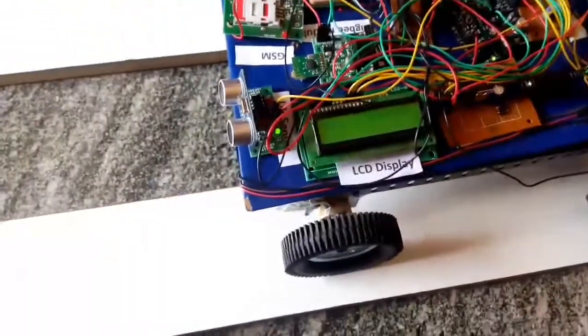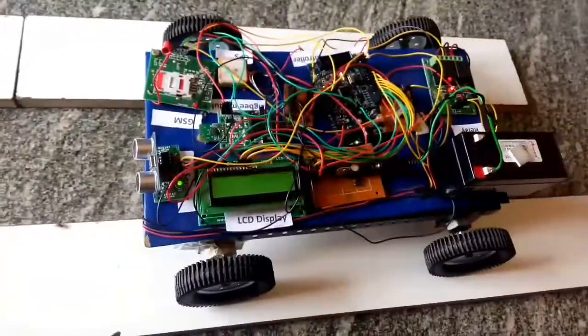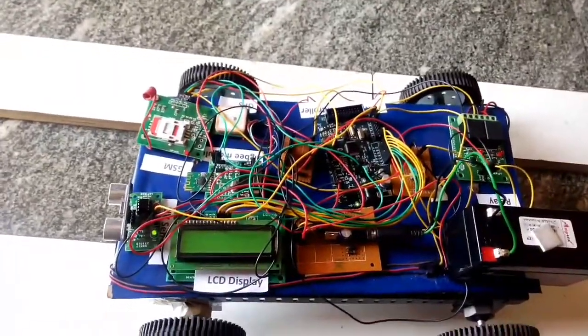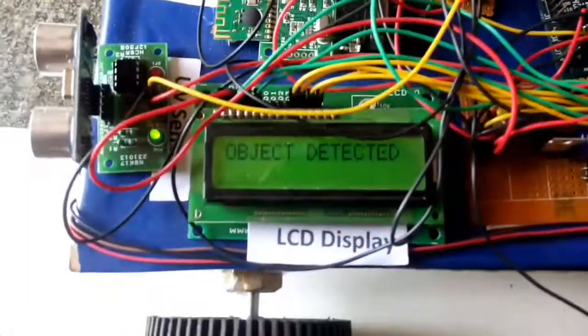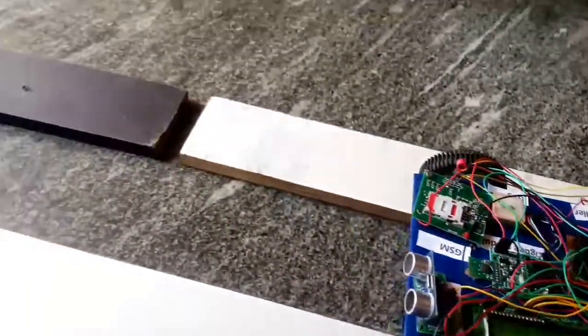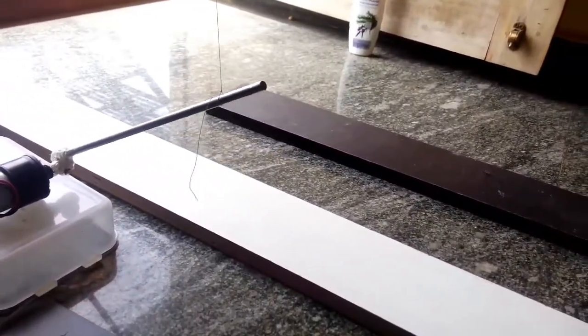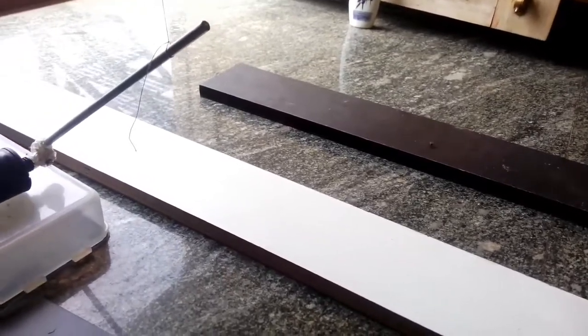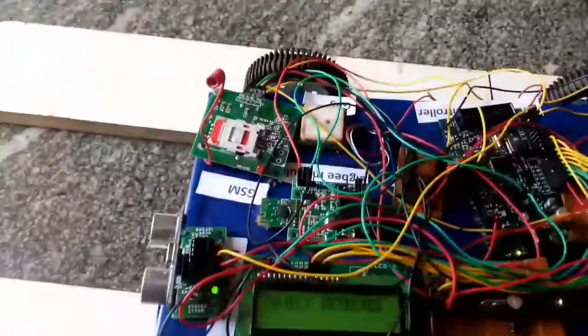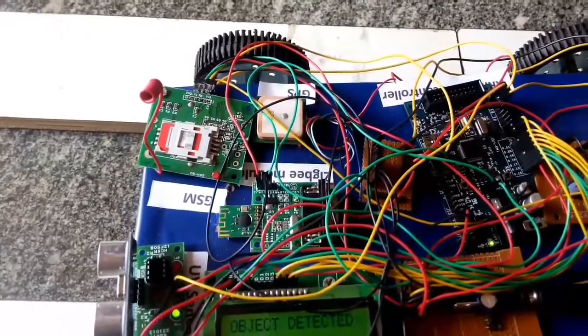Initially control section's barricade is down. Now let us start the robot. The robot starts moving until it detects the obstacle. When it detects the obstacle, LCD displays object detected and the barricade is turned open to move the vehicles at the railway crossing. The message of current location of the object detected is sent to registered mobile number.